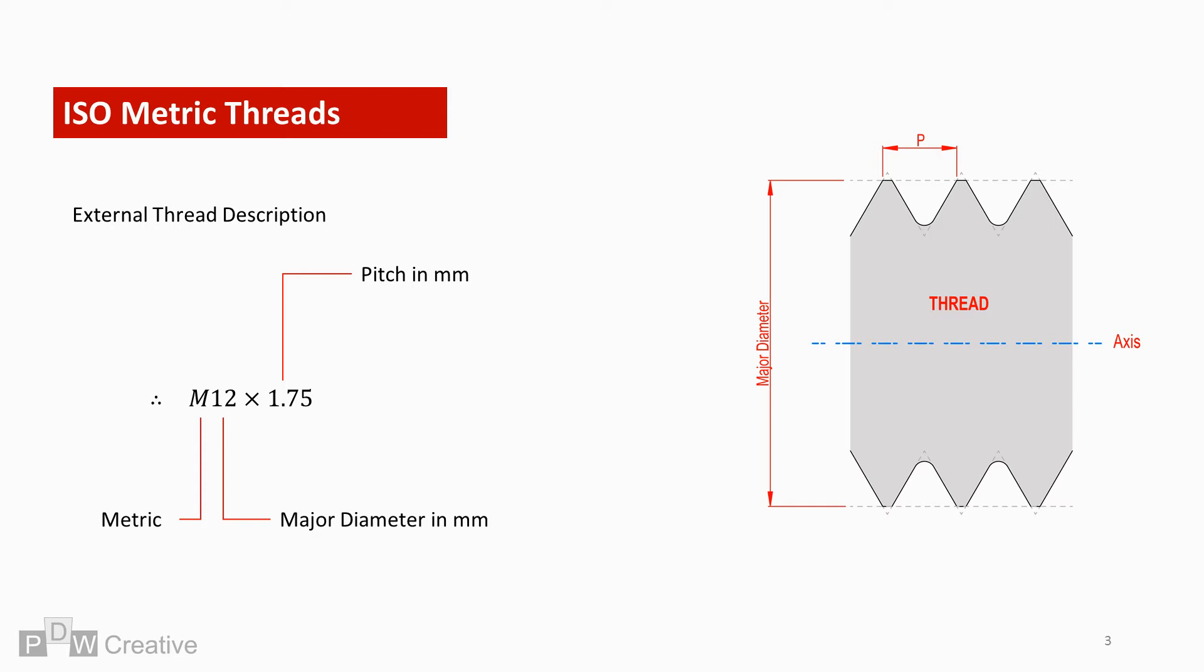When tolerances are referenced, an extra designation sometimes appears after the pitch. In this example, I've added 5G and 6G. 5G refers to a negative tolerance deviation on the pitch diameter, and 6G is a further negative deviation tolerance on the major diameter.